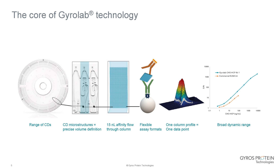This allows us to have assays of different formats. It's very much an open platform, so things like competitive, sandwich, and other types of assays can be performed. Detection involves laser-induced fluorescence, which produces a fluorescent profile — a column profile — that can be seen in the viewer and gives an indication of assay binding.